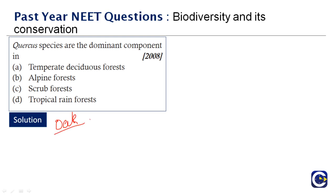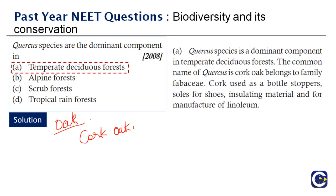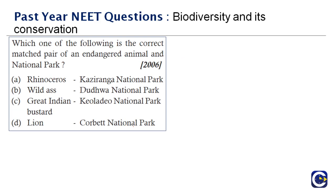These dominant Quercus components are found in the temperate deciduous forest. Quercus suber, commonly known as cork oak, belongs to the family Fagaceae. Cork is used in bottle stoppers, soles of shoes, insulating material, and other manufacturing industries. Therefore, the right answer is option A — temperate deciduous forest.